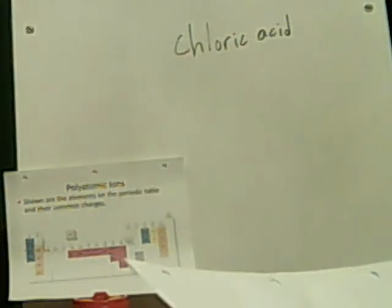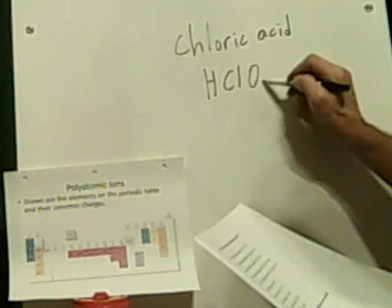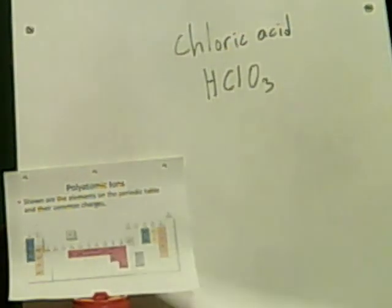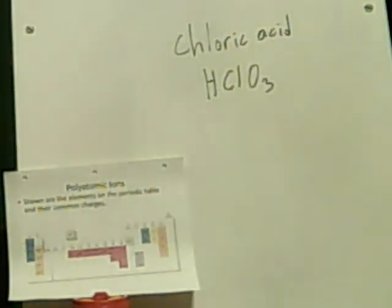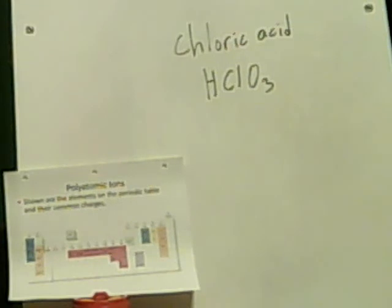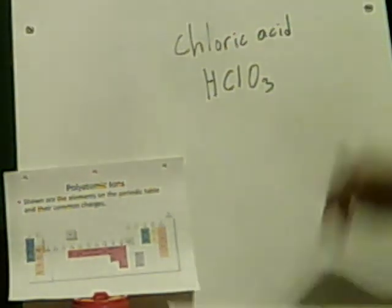The next one is chloric acid. I don't actually know what chloric acid is — I'd only guess hydrochloric acid. But looking at the answer sheet, this is actually HClO3. So this is an acid that uses ClO3. They had ClO2 called chlorite previously; there must be a ClO3 known as chlorate. Chloric acid — ClO3. I'm not familiar with this acid; I wouldn't get that right.